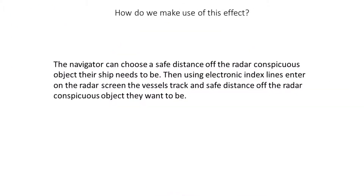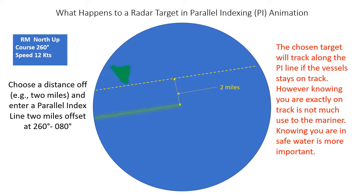How can we make use of this effect? By inspecting the chart, a navigator can choose a safe distance off the radar conspicuous object their ship needs to be. Then, using electronic index lines, enter on the radar screen the vessel's track and safe distance off the radar conspicuous object they want to be. In this animation, the parallel index line has been set at a safe distance of 2 miles at 260 degrees / 080 degrees. The chosen target will track along the parallel index line if the vessel stays on track.